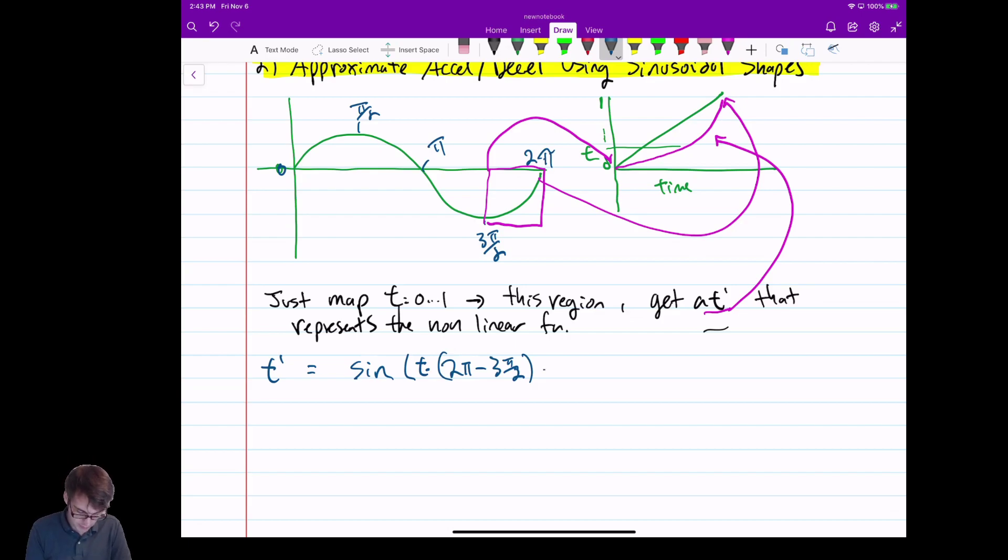And I also need to add the minimum point here. So plus 3π/2. Did I get that right? Yeah. Okay, so when t is 0, this whole front bit gets 0, and then I just get 3π/2, which is what I wanted. At t of 0, I get 3π/2. I get that bottom of that function. The other thing I'll notice is that when t is 1, I get 2π minus 3π/2 plus 3π/2. I get 2π. So when t is 1, I get the right end.